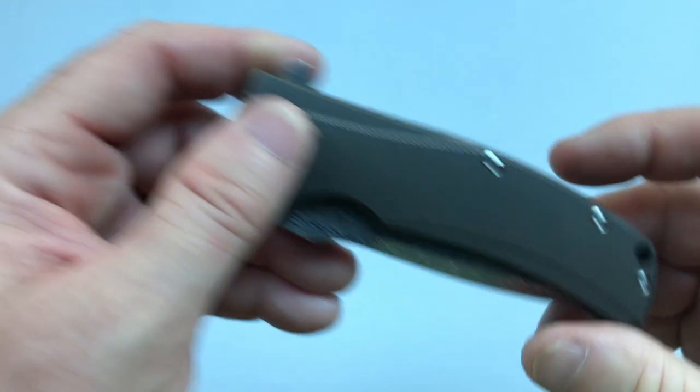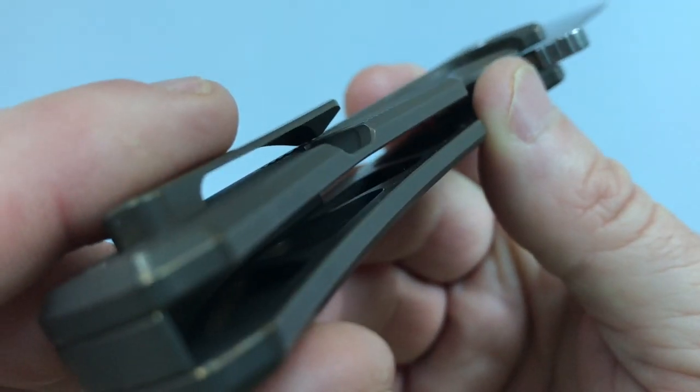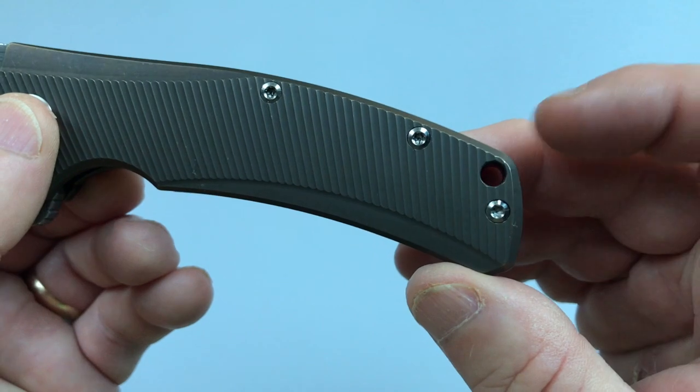The handle is milled titanium and there's some internal pocketing. I'll see if I can show that to you. There we go, the internal pocketing. There is also a lanyard hole at the end of the knife.